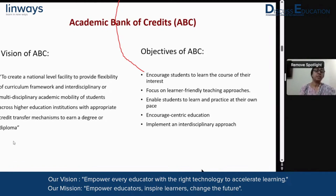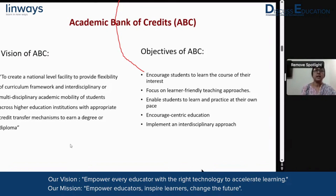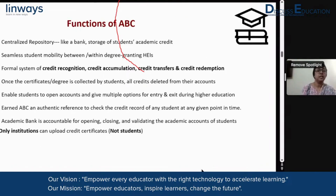When we talk about more than one academic institution that a student is able to get credits from, the question is: who would be the degree-granting institution? That has been taken care of — 50% of courses are to be done from one institution. This encourages a student to learn courses of his or her interest, and this is a very learner-friendly teaching space that enables a student to have several democratic choices, encouraging interdisciplinarity and multidisciplinarity in terms of the student's learning journey.